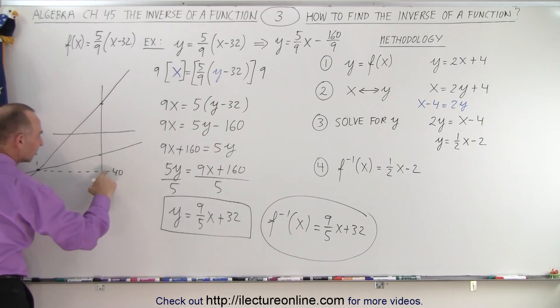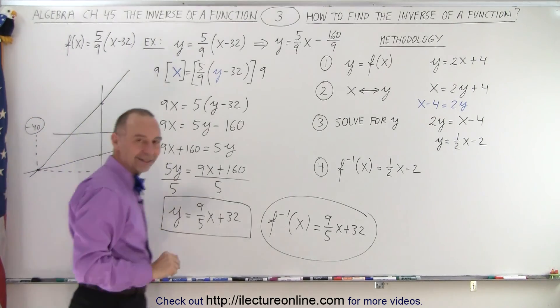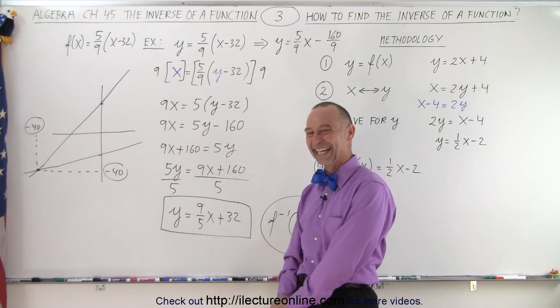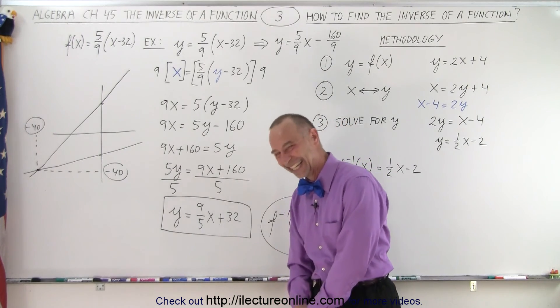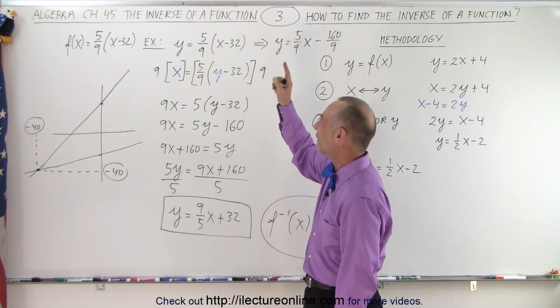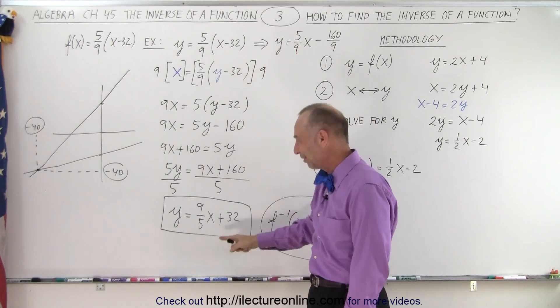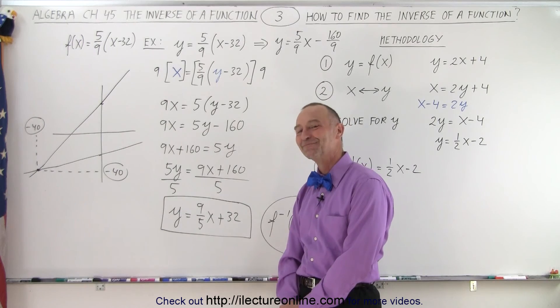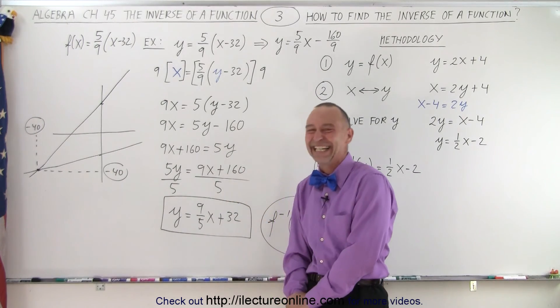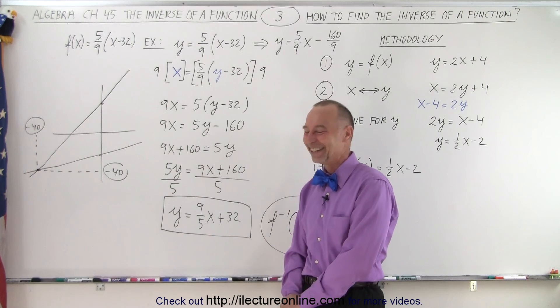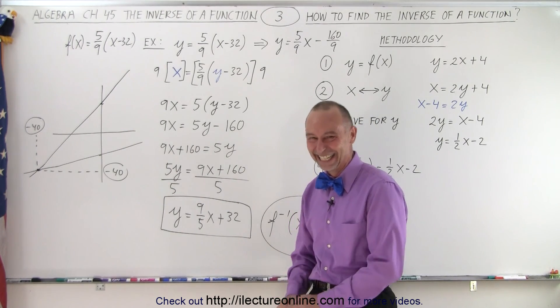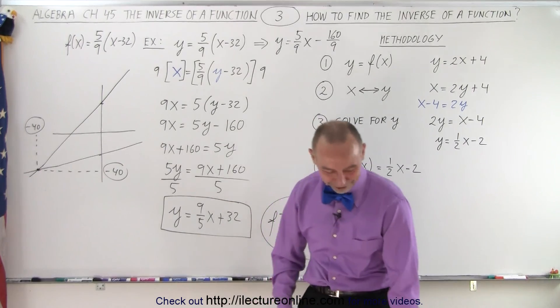And that is at minus 40 this way. And that would be at minus 40 that way. Minus 40 like that. Hey, that is brilliant. Yes. If you graph the function and the inverse of the function, where they meet will be at minus 40. All right. Well, my wife is pretty smart to stay away from me. That's true.